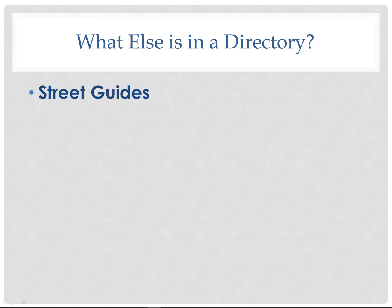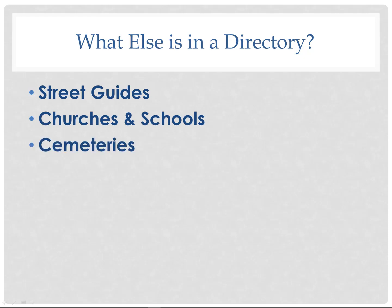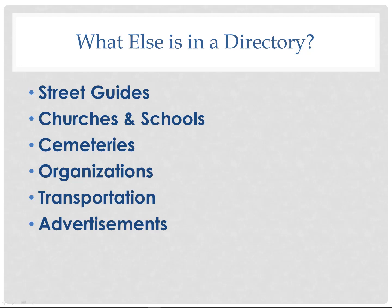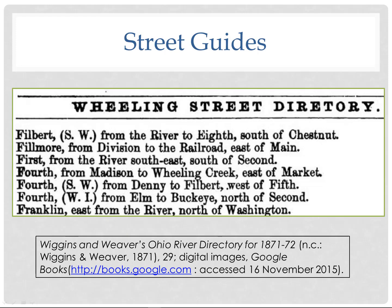There are also street guides, lists of churches and schools, cemeteries, organizations, information on transportation, advertisements, and sometimes even marriages and deaths. Here is an example of a street guide from a Wheeling, West Virginia directory from 1871–72. We see that 4th Avenue runs from Madison to Wheeling Creek east of Market. If you find an address for your ancestor but have no idea where that street is in the city, this will help you see where it was at that particular time — it may not be the same as today.